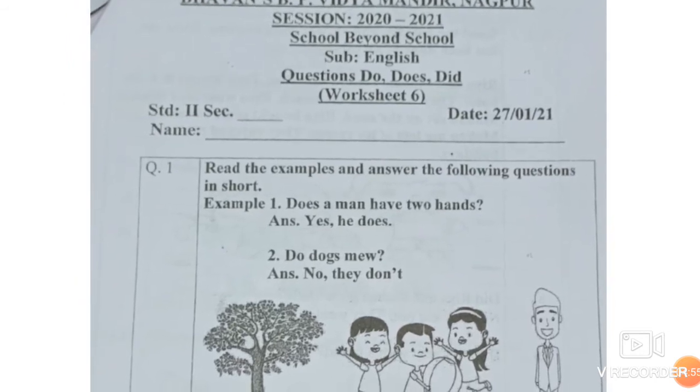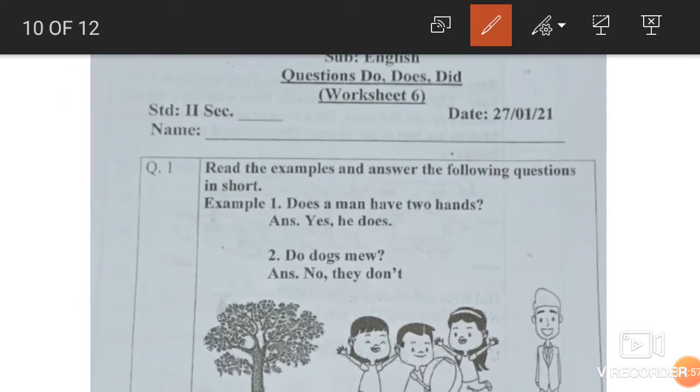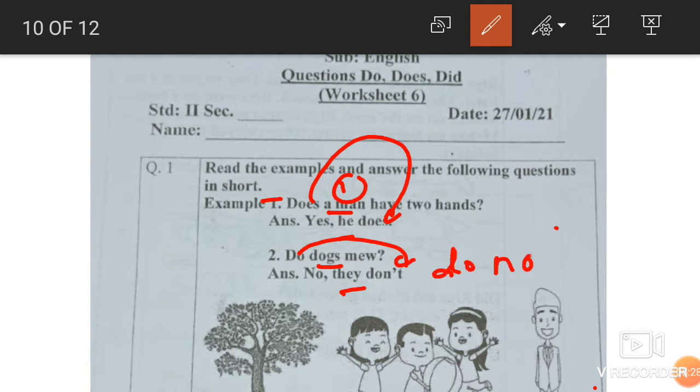First example. Does a man have two hands. One man means one person. So a man, so yes, he does. Does in the question, does in the answer. Do dogs moo. Dogs more than one. This is they. Do dogs moo. No, they don't. Do not or don't. And because dogs came, so they. Here a man one, so he.